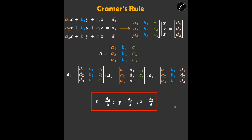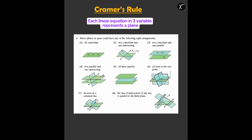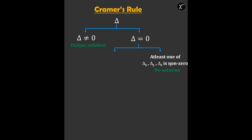But our question is not to find the solution, but to tell whether we will get a solution or not. Similar to the two-variable case where each equation represents a straight line, here each linear equation in three variables represents a plane. All cases can be categorized using Cramer's Rule in this flowchart: first find delta. If delta ≠ 0, we get a unique solution. If delta = 0 and at least one of delta x, delta y, delta z is not zero, we get no solution. If delta x, delta y, and delta z are all zero, we can get infinite or no solution.